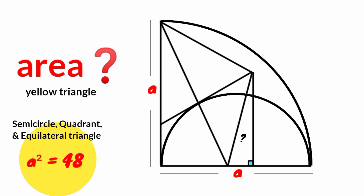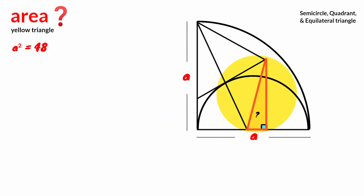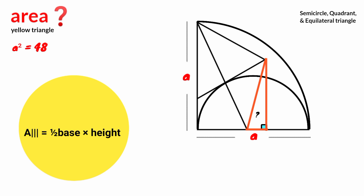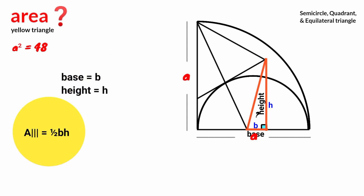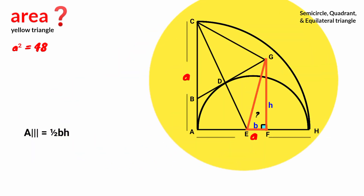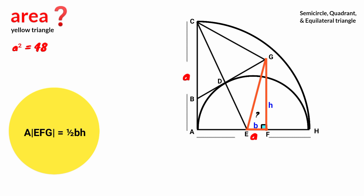Here we are given A squared equal to 48. So how can we calculate the area of this triangle? It is very simple. The formula for calculating the area of a triangle is 1 over 2 base times height. The triangle is a right angle triangle, and when calculating the area of a right angle triangle, the perpendicular sides are the base and the height. So if we take this side as the base B, this must be the height H. So area of triangle EFG equals 1 over 2 BH.